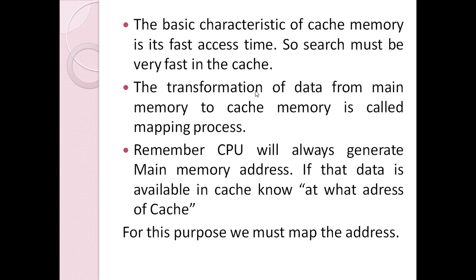The basic characteristics of cache include fast access time — it is a faster, more expensive, and smaller memory. Another important characteristic is the transformation of data from main memory to cache memory, which is called the mapping process. Our program resides in main memory and a part of that program is brought into cache memory.